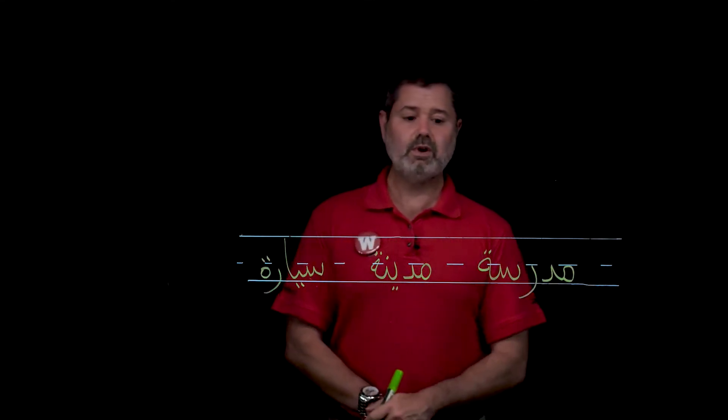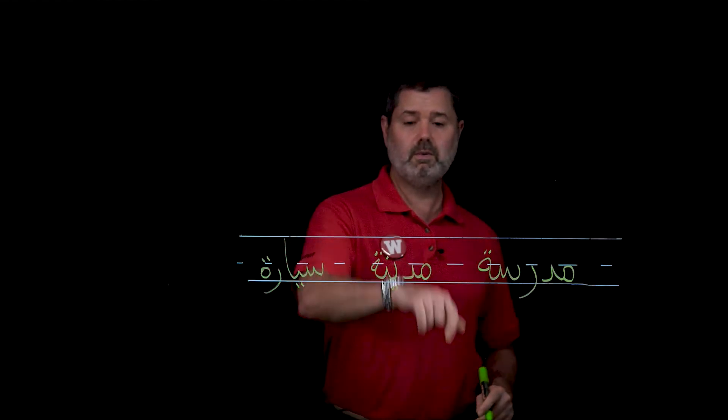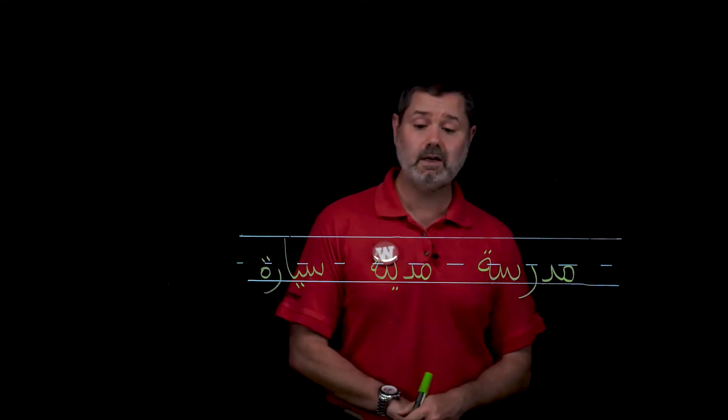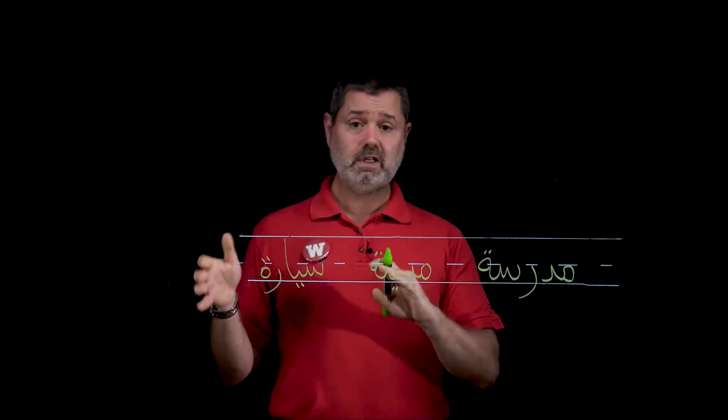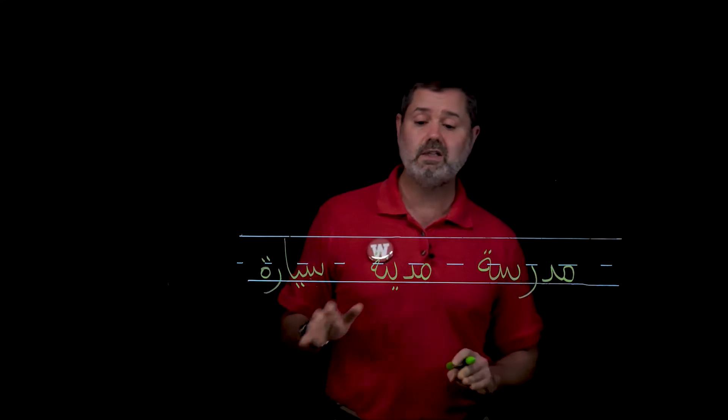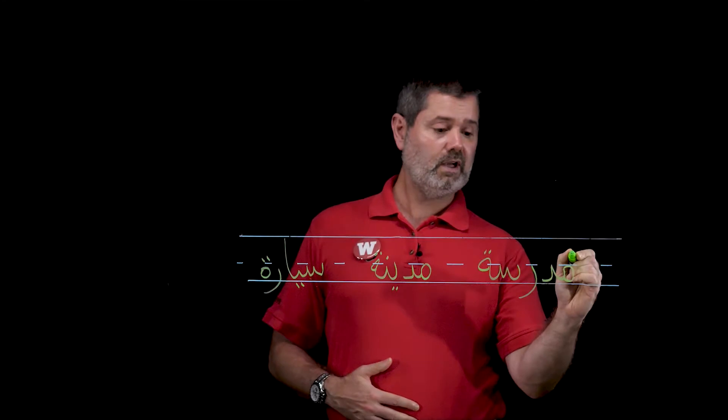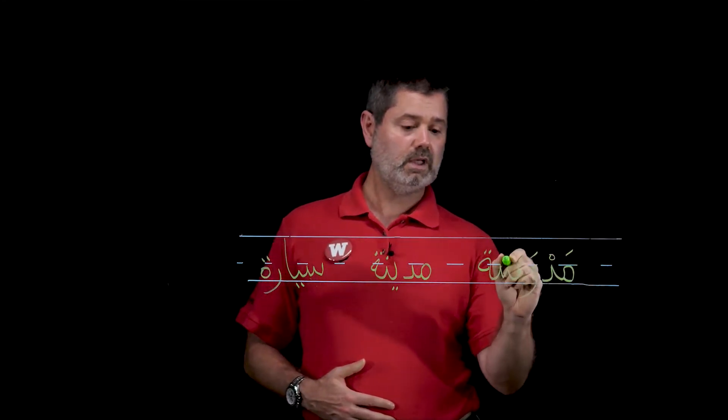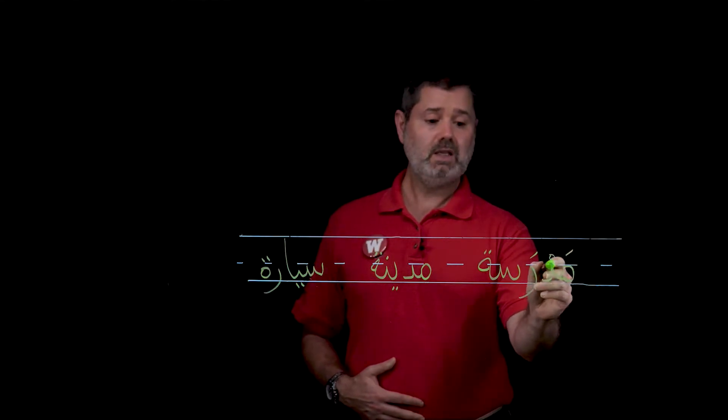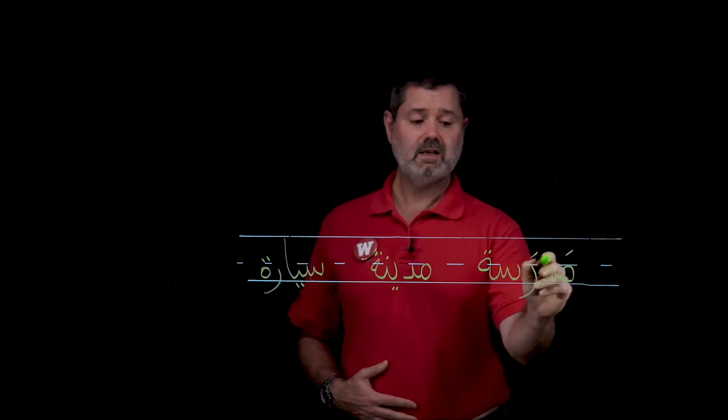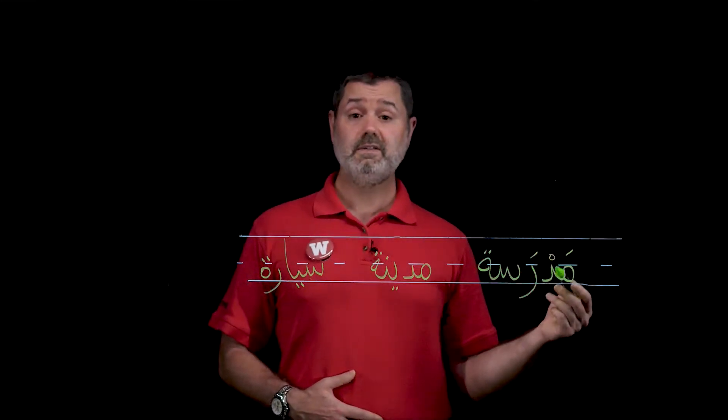Notice I have three words here. Notice they all end in tamabuta. Two of them are connected, one's not because it's following a non-connecting letter. But it's easy to recognize. You would look at these and you would guess that these three things are all feminine and you'd be correct. These are all very common nouns and they're all feminine. Let's look at the first one. Now put the vowels on it to help you. This is madrasa. You may have heard this word before. Madrasa is a school.